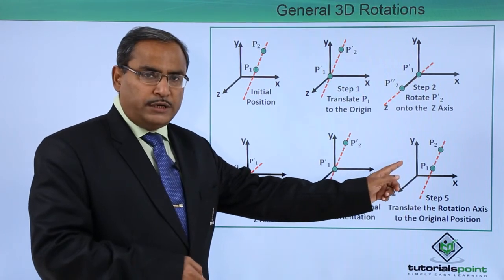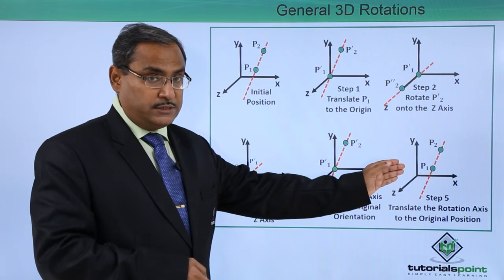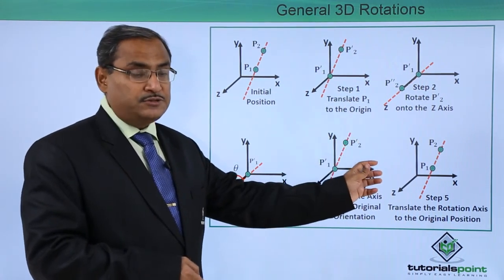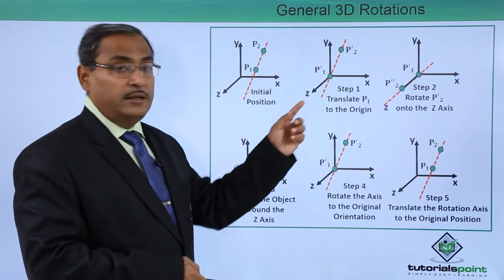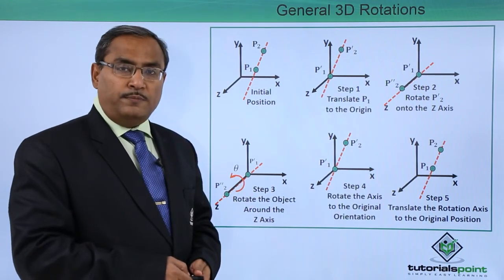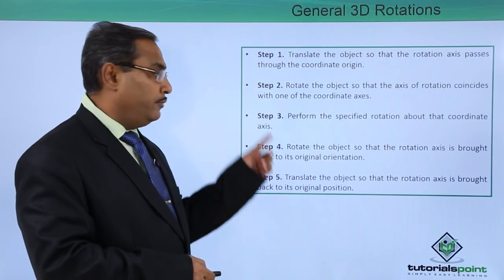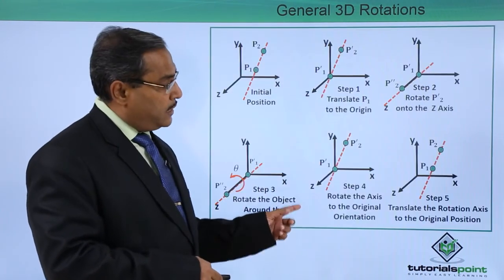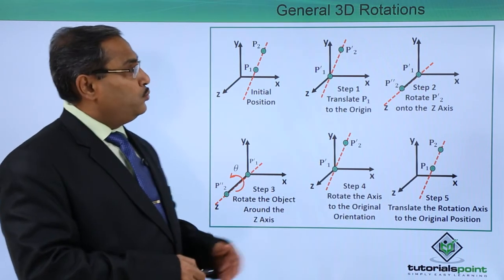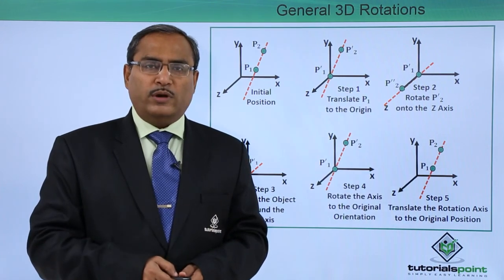Now here the rotated object will be having the respective translations. The object coordinates will have the respective translations and that is the result in translation. That means, the general 3D rotation coordinates will be obtained. How many steps did you follow? We followed 5 steps. You can pause this video here. You can read these respective steps and you can compare with this diagram. In this way we have discussed the general 3D rotation. Thank you for watching this video.